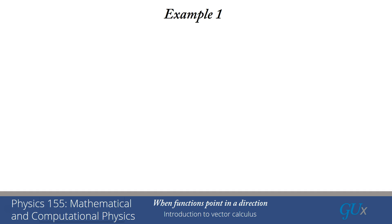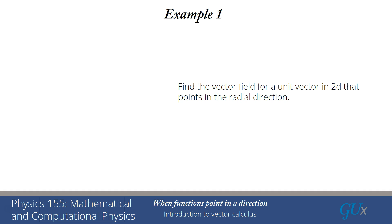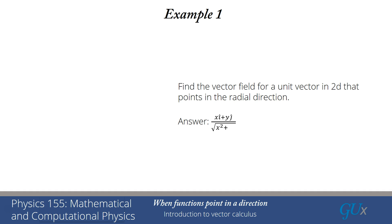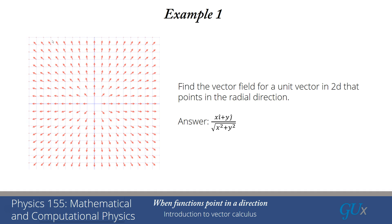Let's take a look at some examples of vector fields. Find the vector field that consists of a unit vector in 2D that points in the radial direction. I'd like you to first try to figure out this vector field before the reveal. The answer is the last one we had looked at before, and that vector field looks like this.